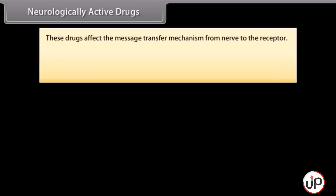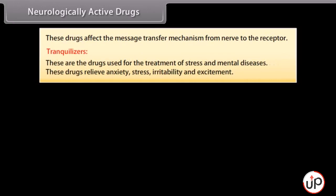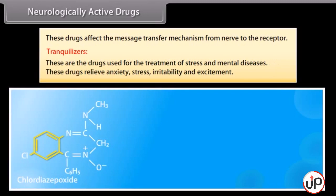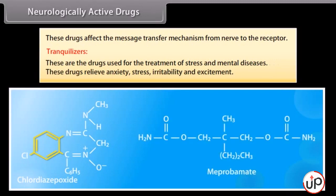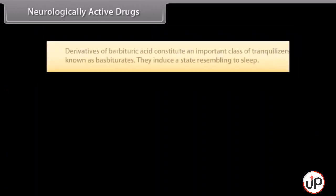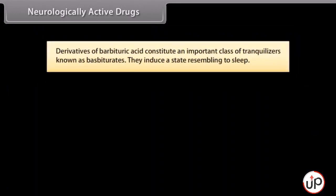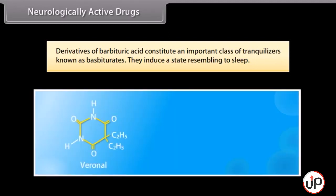Neurologically active drugs. These drugs affect the message transfer mechanism from nerve to receptor. Tranquilizers: these are drugs used for the treatment of stress and mental diseases. They relieve anxiety, stress, irritability and excitement — for example, chlordiazepoxide and meprobamate are mild tranquilizers. Derivatives of barbituric acid constitute an important class of tranquilizers known as barbiturates; they induce a state resembling sleep — for example, veronal and luminal.